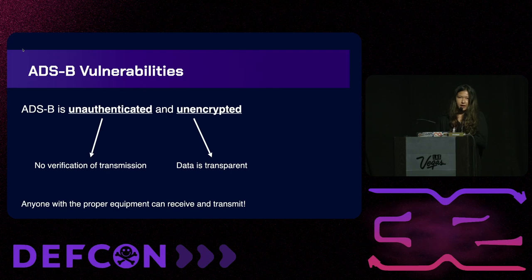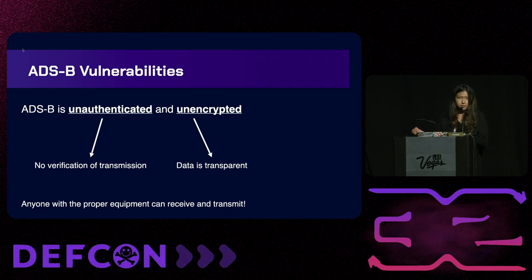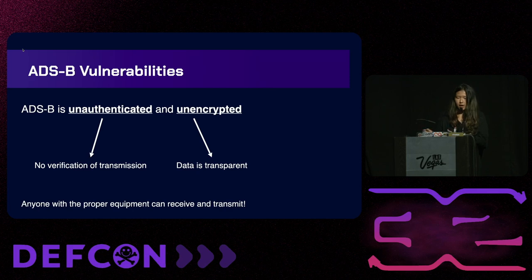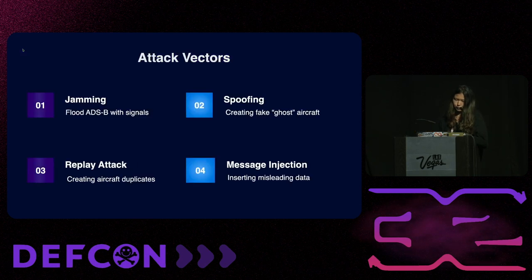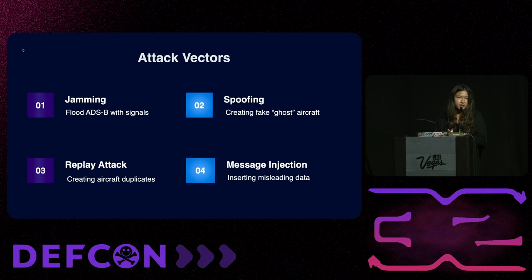Although ADS-B is relied on by a wide range of airplanes and pilots worldwide, it has some core vulnerabilities. It is unauthenticated and unencrypted. Unauthenticated meaning there is no verification of the transmission, so any ground-based hacker can transmit ADS-B packets and it will automatically be received. There's no verification, and its unencrypted nature makes it transparent to anyone who tunes into that frequency. This reveals four core attack vectors on the communications end: jamming, spoofing, replay attacks, and message injection.